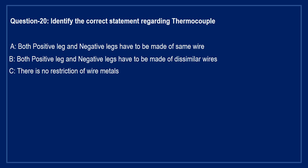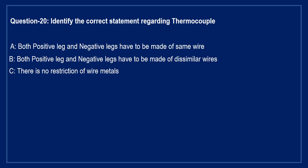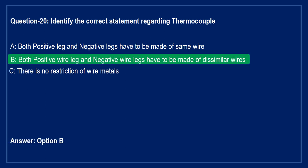Identify the correct statement regarding the thermocouple: Option A: both positive and negative legs have to be made of the same wire. Option B: both positive and negative legs have to be made of dissimilar metal wires. Option C: there is no restriction on metal wires. The right answer is Option B — both positive and negative wires must be made of dissimilar wires.